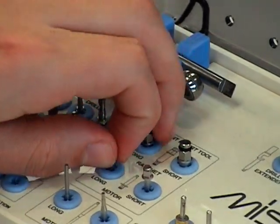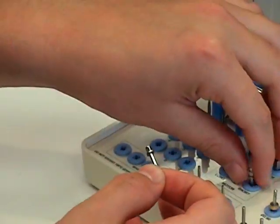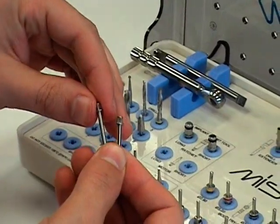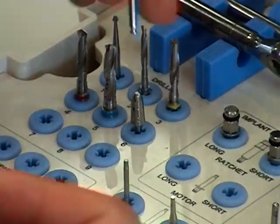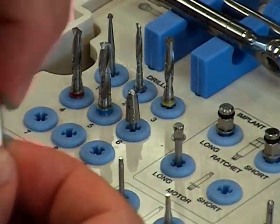Below those, you have the long and short motor mount adapters. This will go into your handpiece, and in the same manner, the other end will go into the fixture mounts to place the implant.